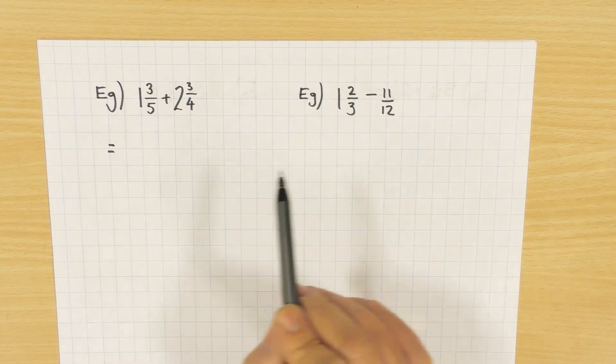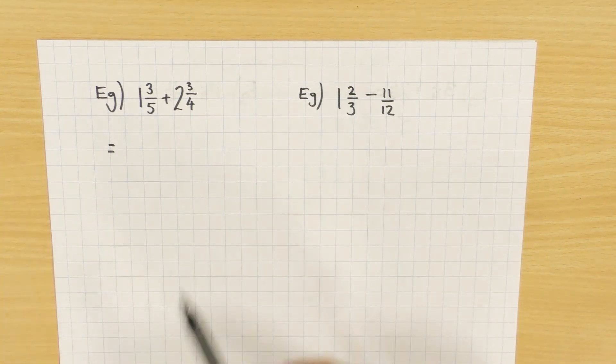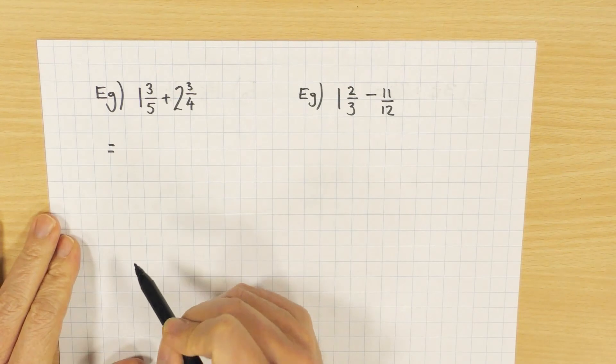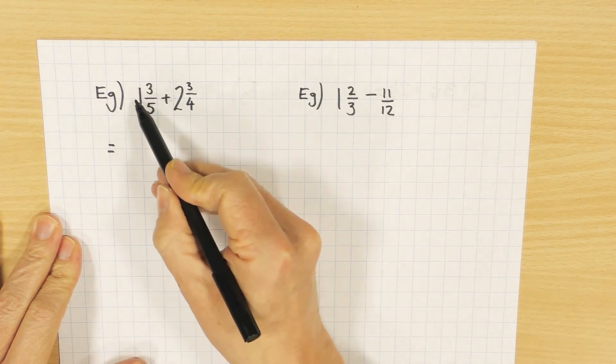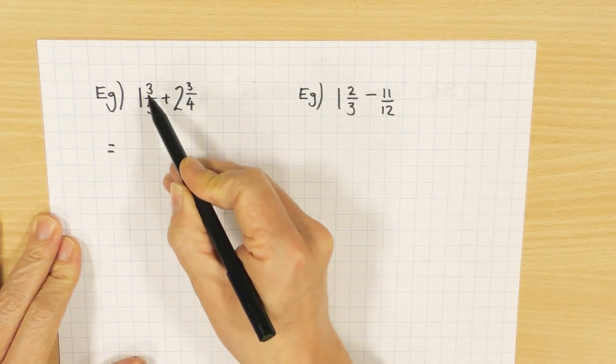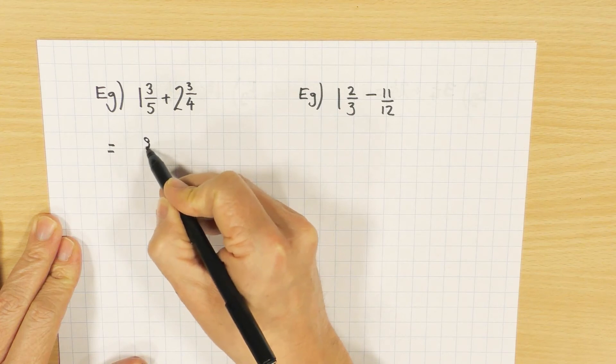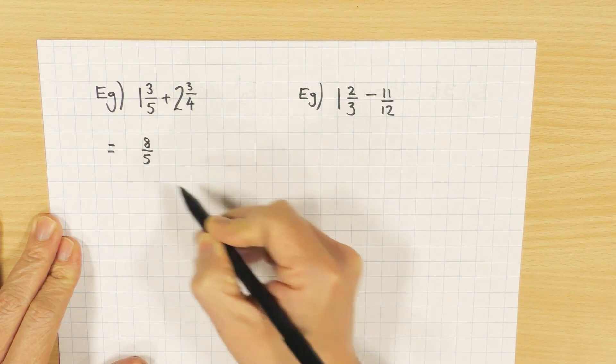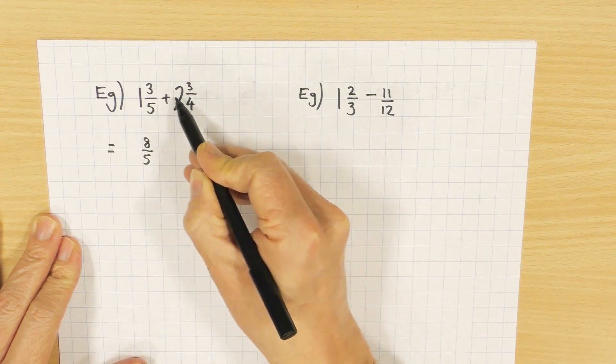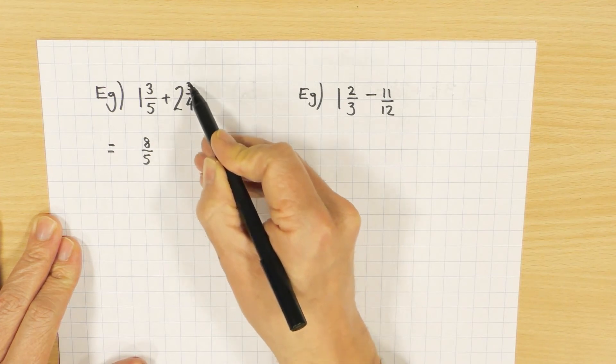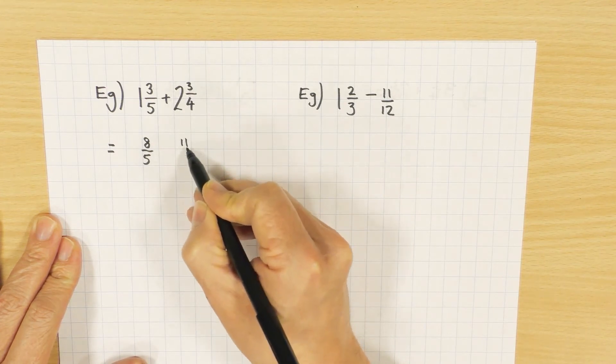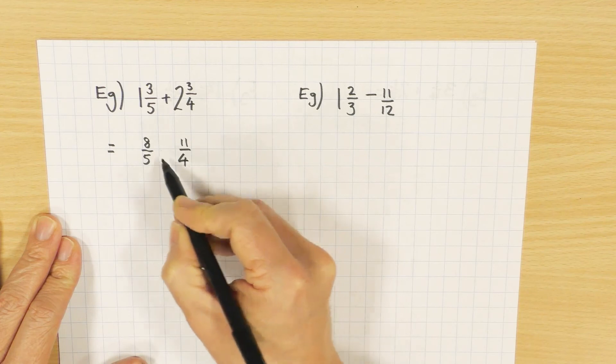So maybe the best way is just to go top heavy every single time. One times five is five, plus three is eight. Eight over five. Two times four, or four times two, is eight, plus the three is eleven. Eleven over four.